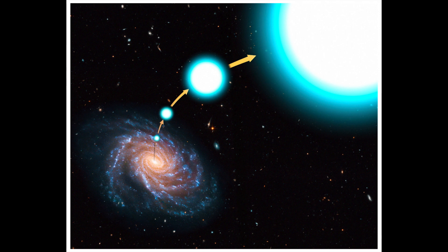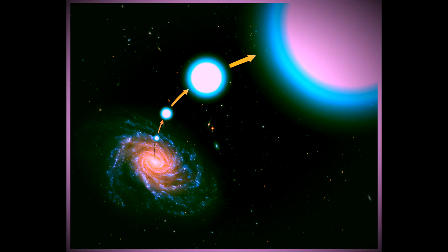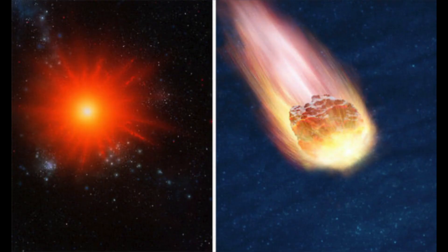And then there are hypervelocity stars. So they're like rogue planets but worse because they're bigger. HE 0437-5439 is one of the fastest hypervelocity stars ever detected. It is blazing across space at a speed of 1.6 million miles an hour, three times faster than our sun's orbital velocity in the Milky Way.